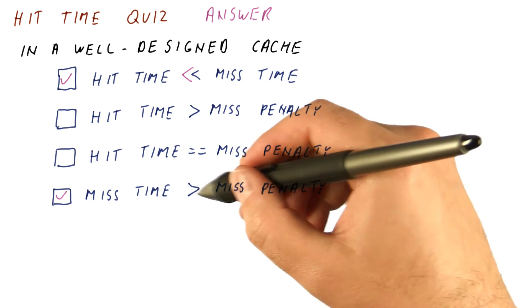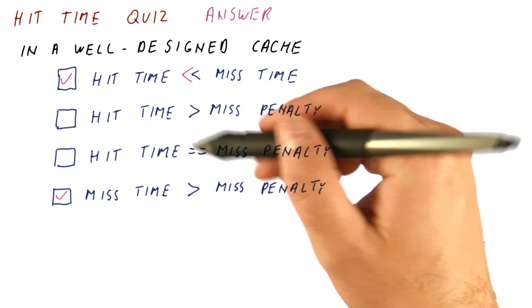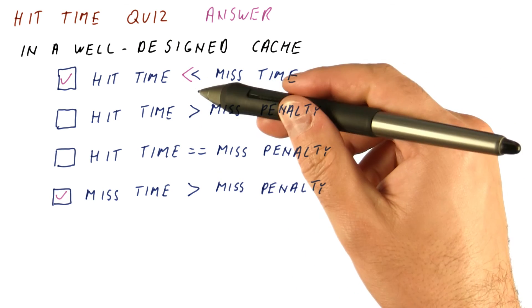While the miss time and miss penalty should be similar to each other because the hit time is so small, and the difference between the two is the hit time.